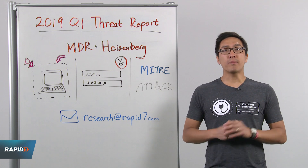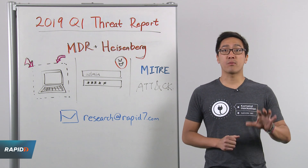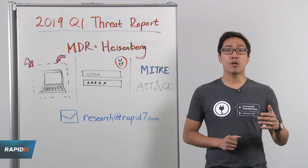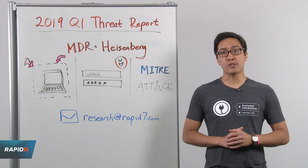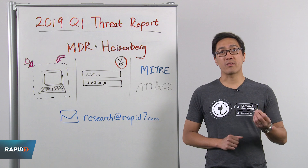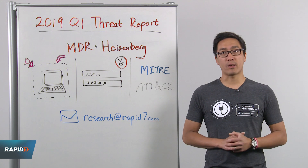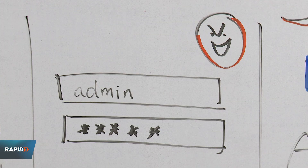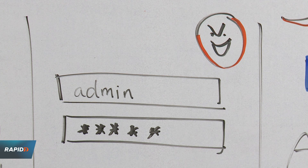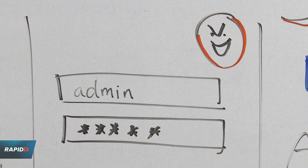Our MDR team also maintains a set of custom threat indicators, which show that suspicious authentication remains one of the most common threat types. In fact, we found that suspicious authentication was a more prominent threat this quarter than in the previous threat report. This reinforces the importance of sound practices around credentials.